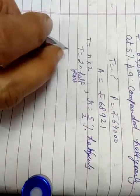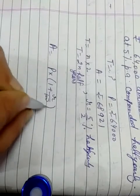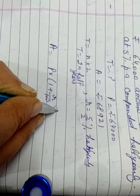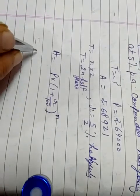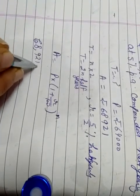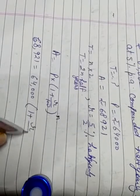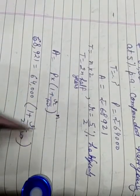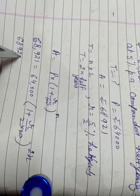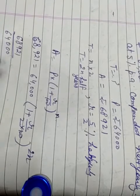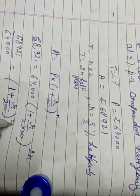Now write the formula of amount: A is equal to P into 1 plus R upon 100 to the power N. By putting the values according to half yearly: A is equal to 68,921, P is equal to 64,000, 1 plus R upon 2 upon 100, to the power 2N. Transposing 64,000 to the left side by dividing: 1 plus R upon 200 raised to the power 2N.